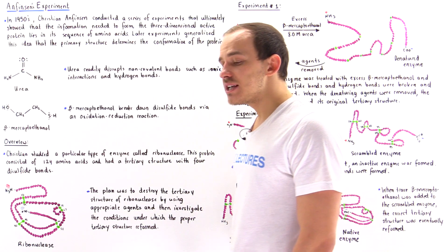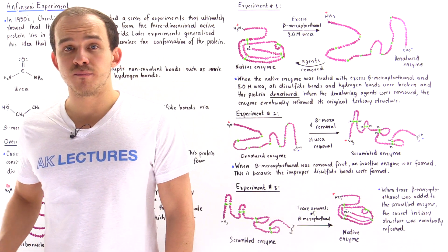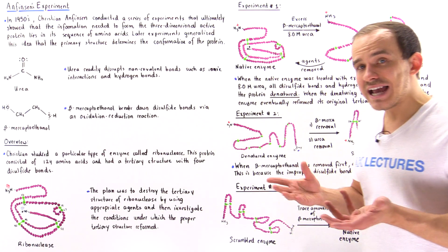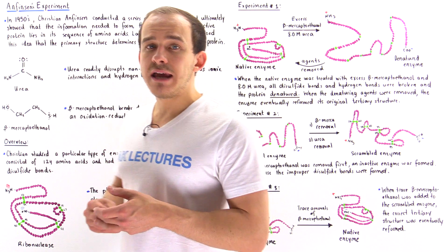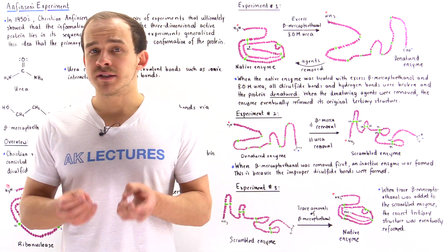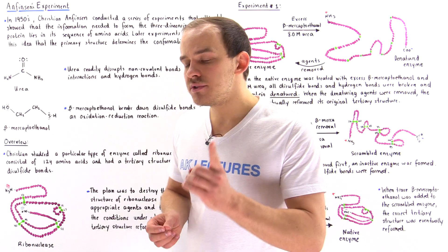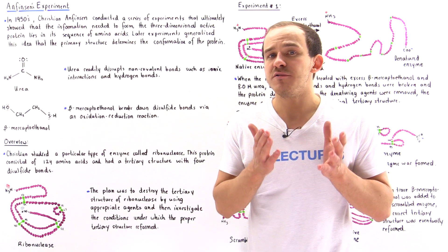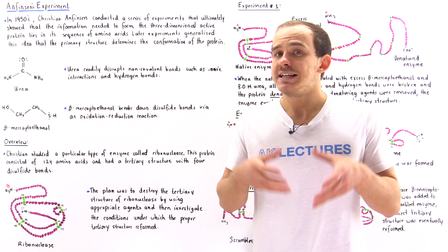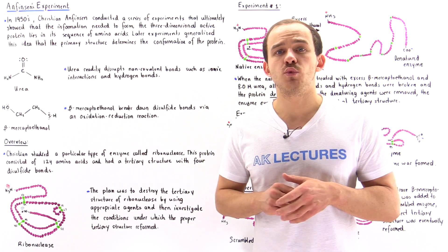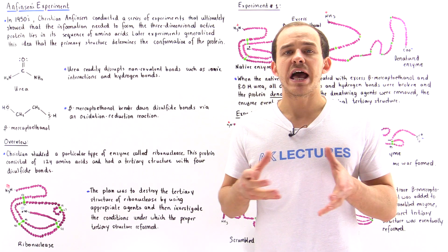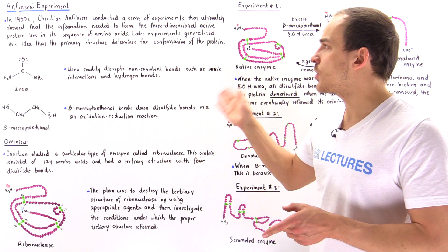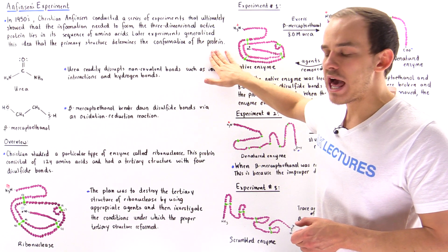The question is, how exactly do we know that, and how did we discover this important fact about proteins in biochemistry? In the 1950s, an American chemist by the name of Christian Anfinsen conducted a series of important experiments demonstrating that all the information needed to form that three-dimensional structure of the polypeptide is stored in the specific sequence of amino acids within that polypeptide. Later experiments confirmed that the primary structure determines the conformation of the protein.